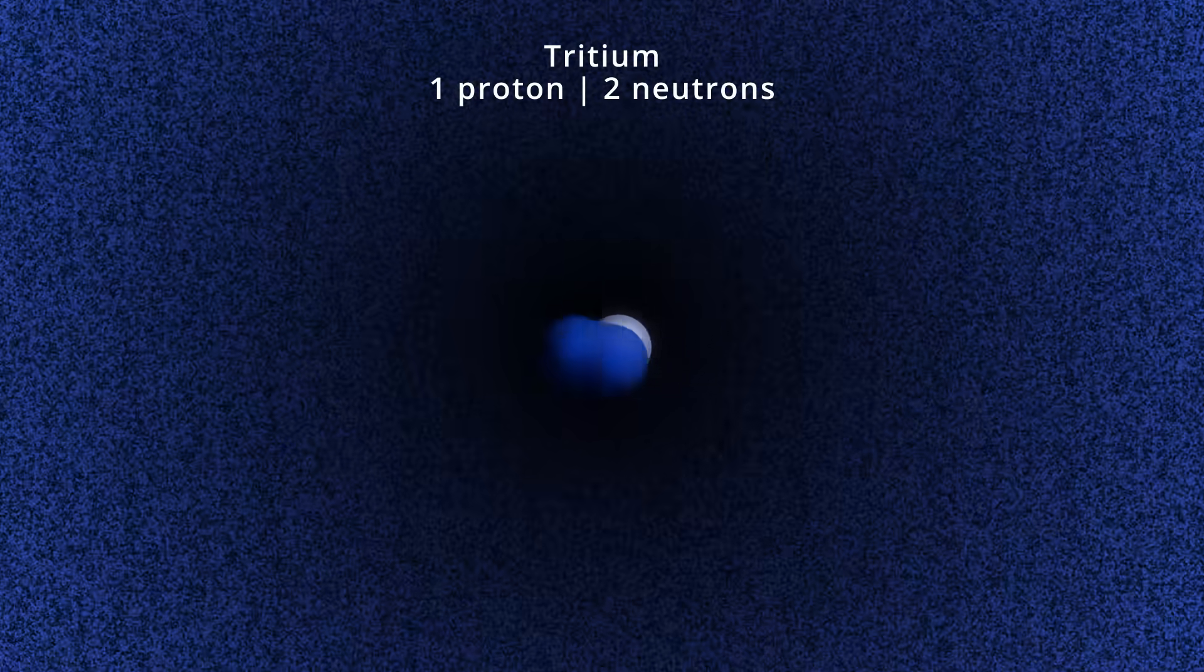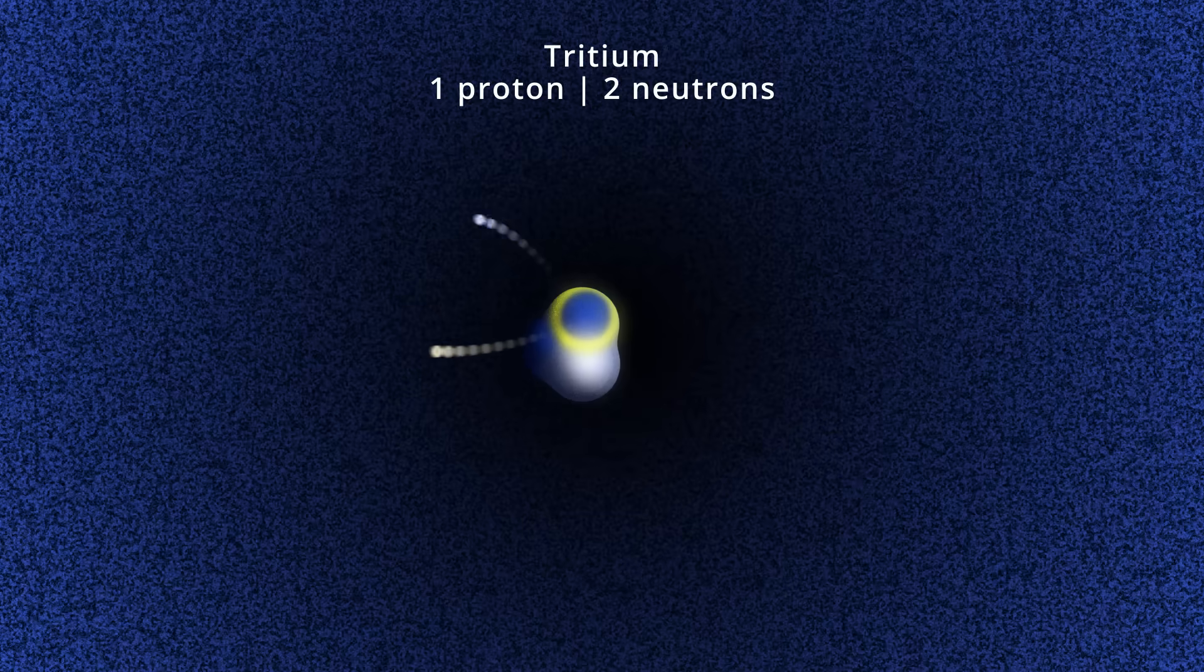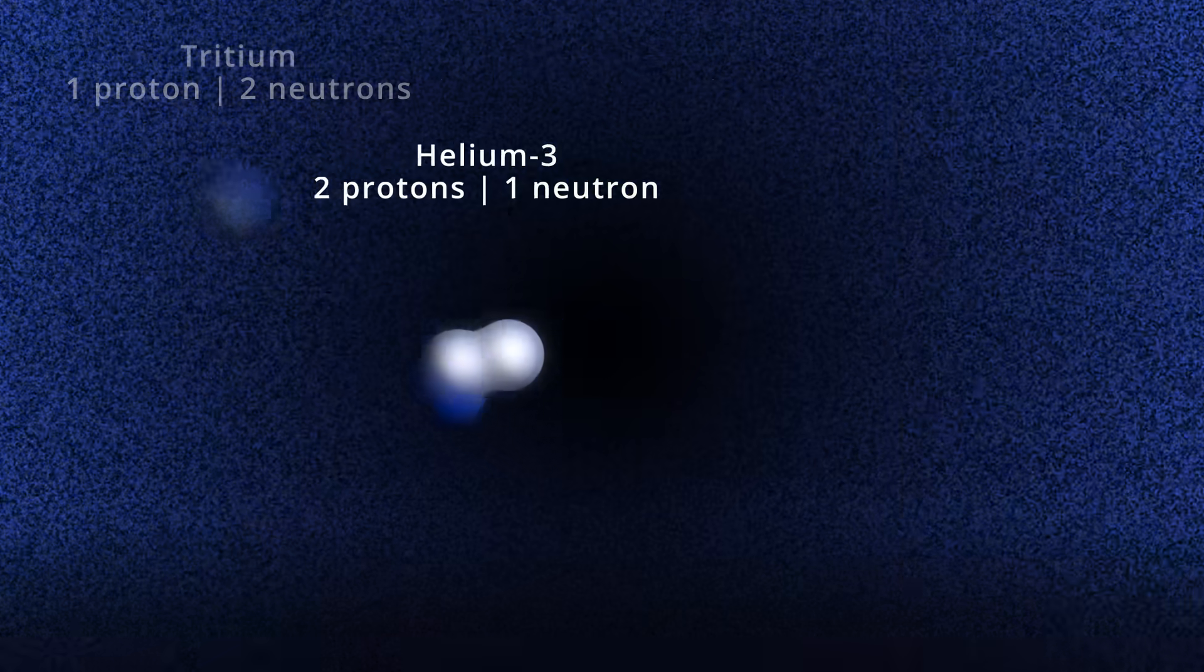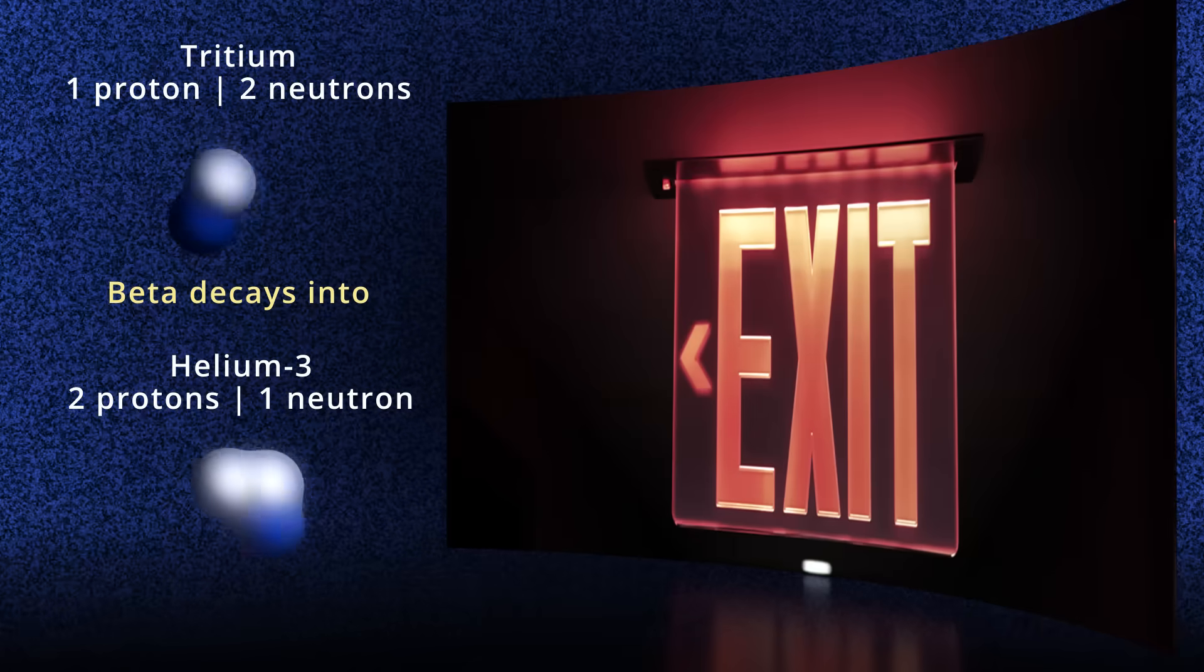For example, a neutron can decay in a tritium nucleus, turning it into helium-3, a process that powers our exit signs.